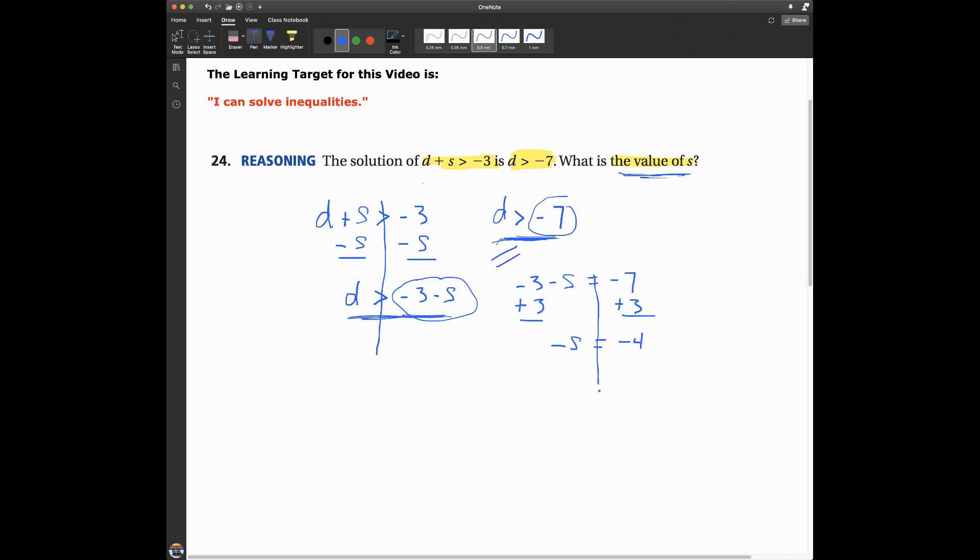And then I want positive S. So I don't want negative S. Remember, this is the same thing as saying negative 1 times S is equal to negative 4. So I can divide both sides by negative 1 since I'm multiplying by negative 1. So I'm going to divide by negative 1 here so that negative 1s cancel and I'm just left with S. So S will equal negative 4 divided by negative 1. It's a positive number. It is just 4.